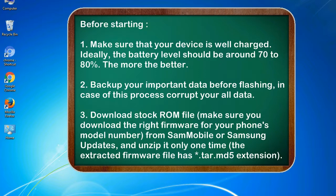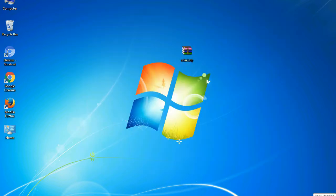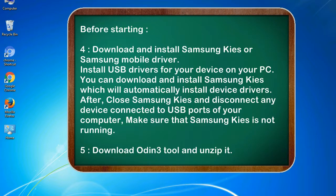3. Download the stock ROM file. Make sure you download the right firmware for your phone's model number. From Sammobile or Samsung Updates, and unzip it only one time — the extracted firmware file has a *.tar.md5 extension. 4. Download and install Samsung Kies or Samsung mobile driver to install USB drivers for your device on your PC. You can download and install Samsung Kies which will automatically install device drivers. After, close Samsung Kies and disconnect any device connected to USB ports of your computer. Make sure that Samsung Kies is not running.